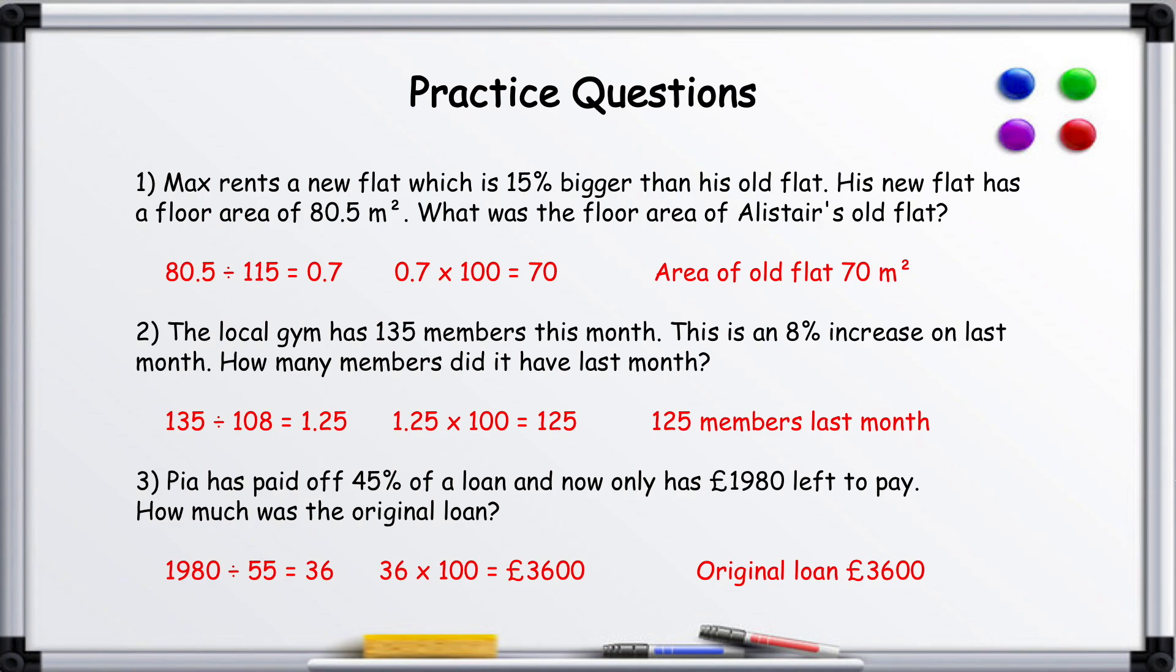So let's just quickly look at the percentage reduction one. Number three: Pia has paid off 45% of a loan and now only has £1,980 left to pay. So she's paid 45% off. This value here will be 55% of the original total, so this would be 55%.